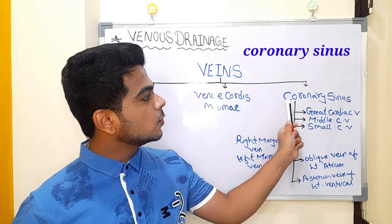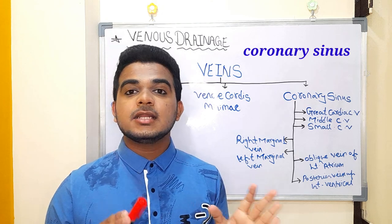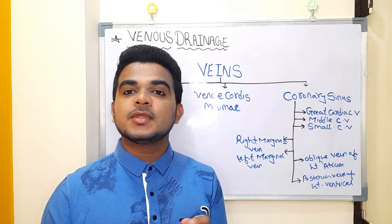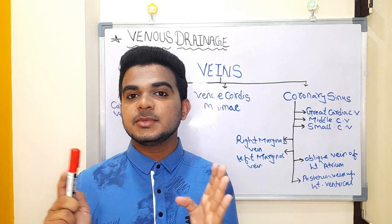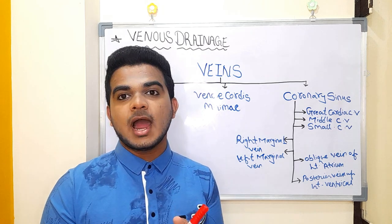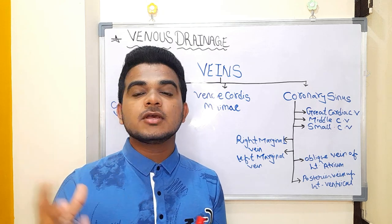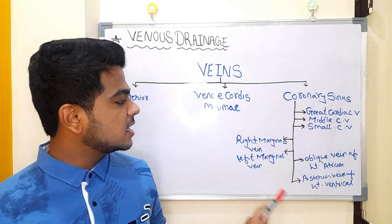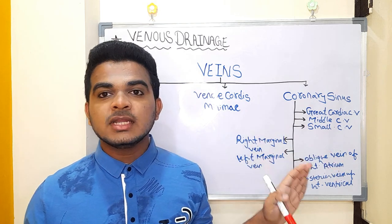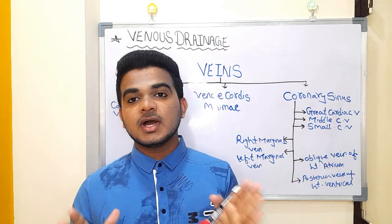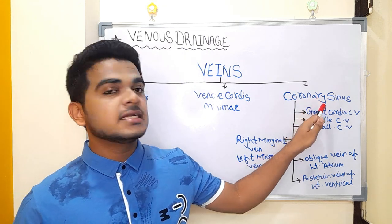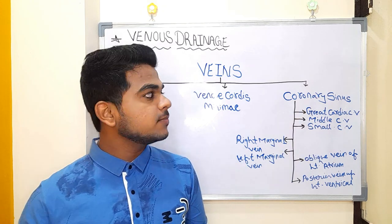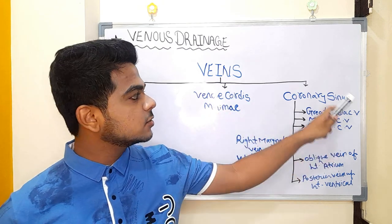The most important vein of the heart is the coronary sinus. It is the largest vein of the heart, three centimeters long, present posteriorly, and opens into the right atrium from the posterior wall. Under the coronary sinus there are seven veins — branches that collect deoxygenated blood from various parts of the heart and drain into the coronary sinus, which finally drains the deoxygenated blood into the right atrium.